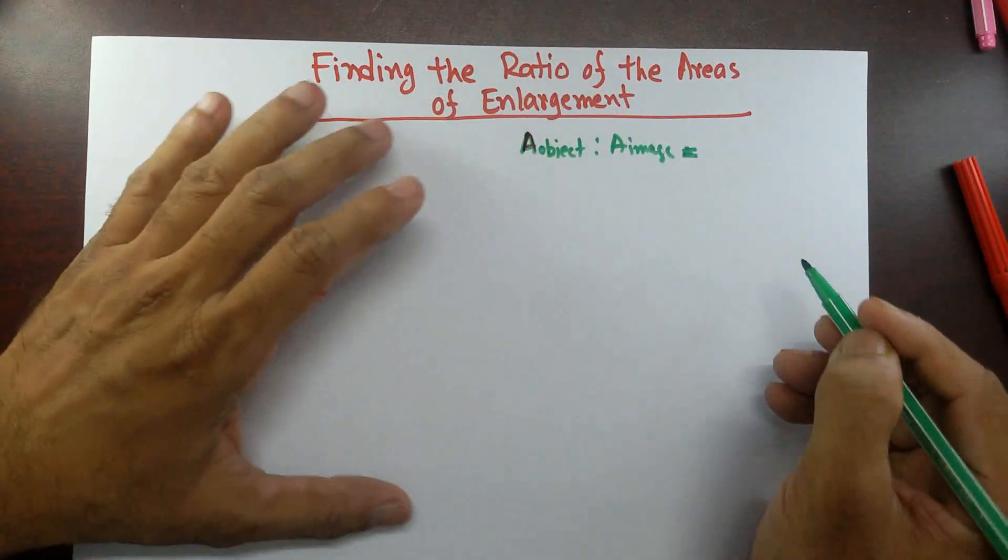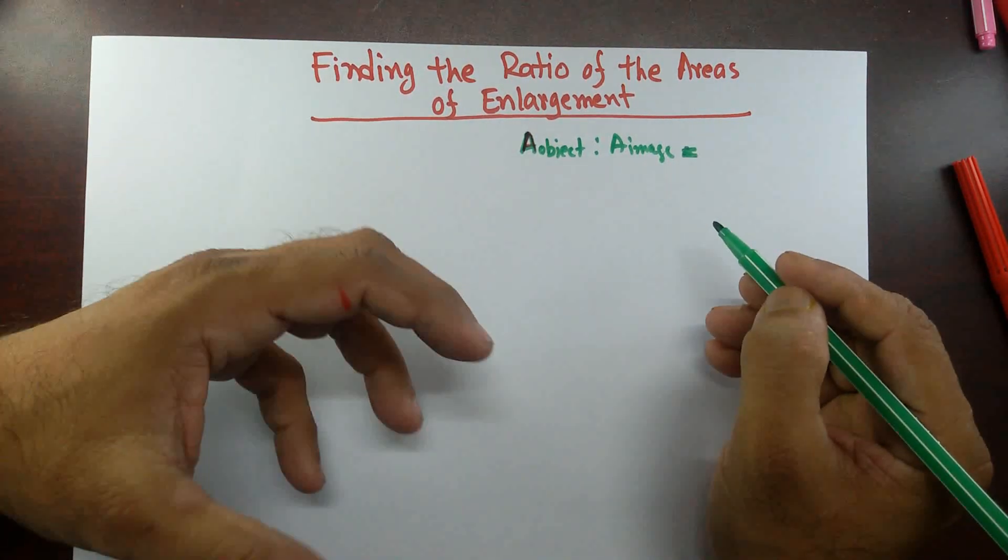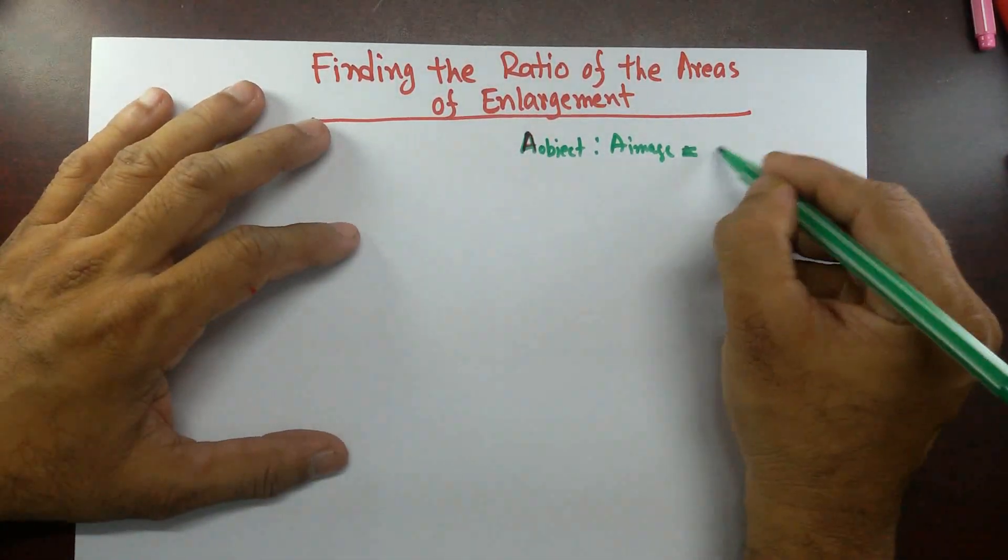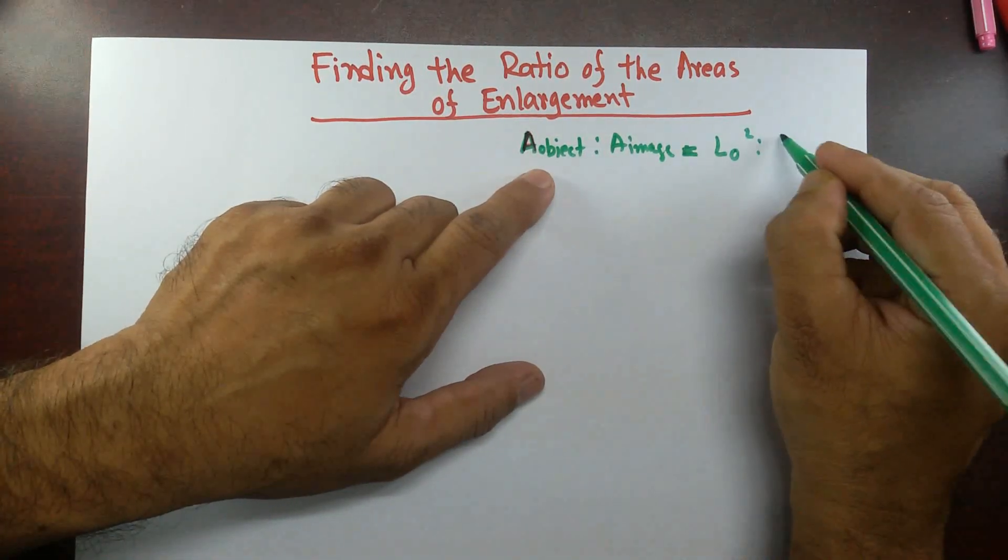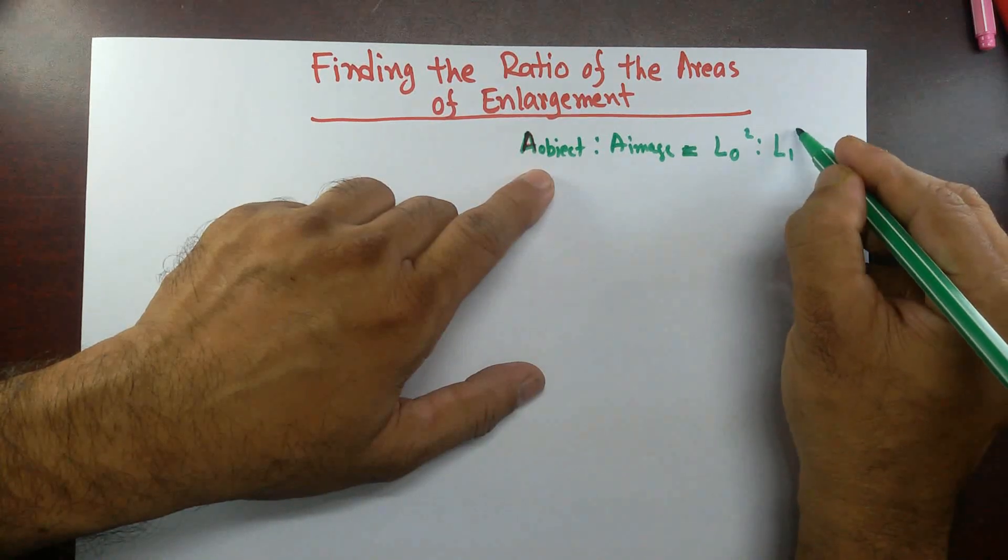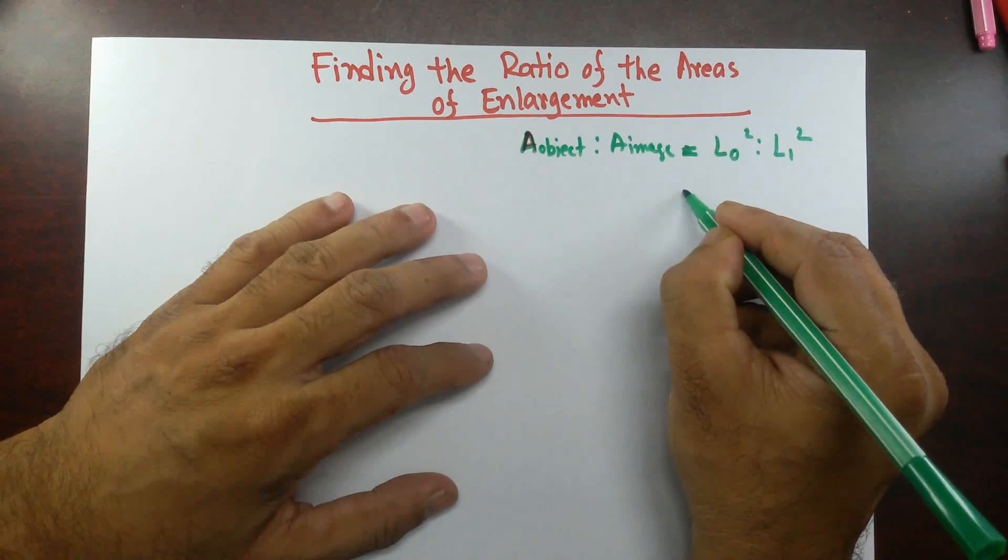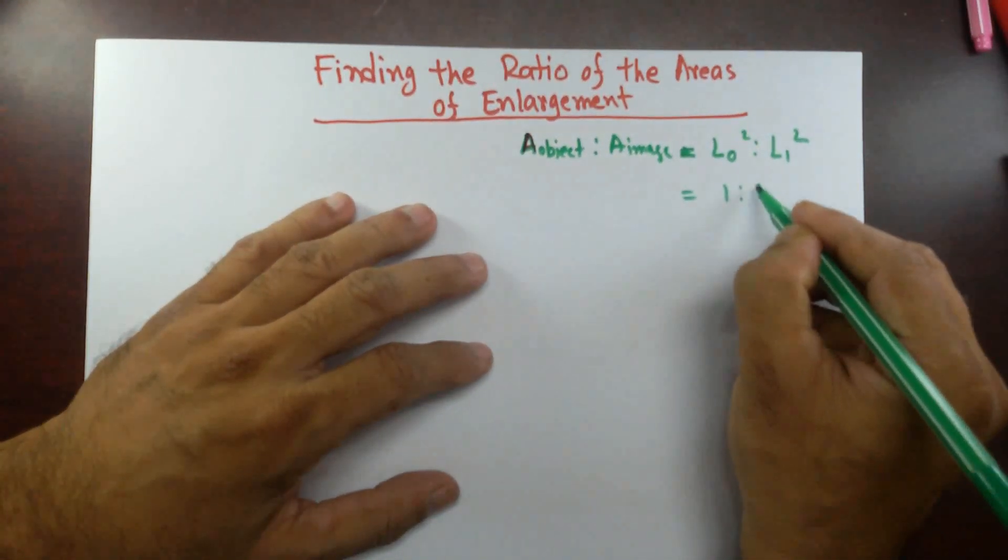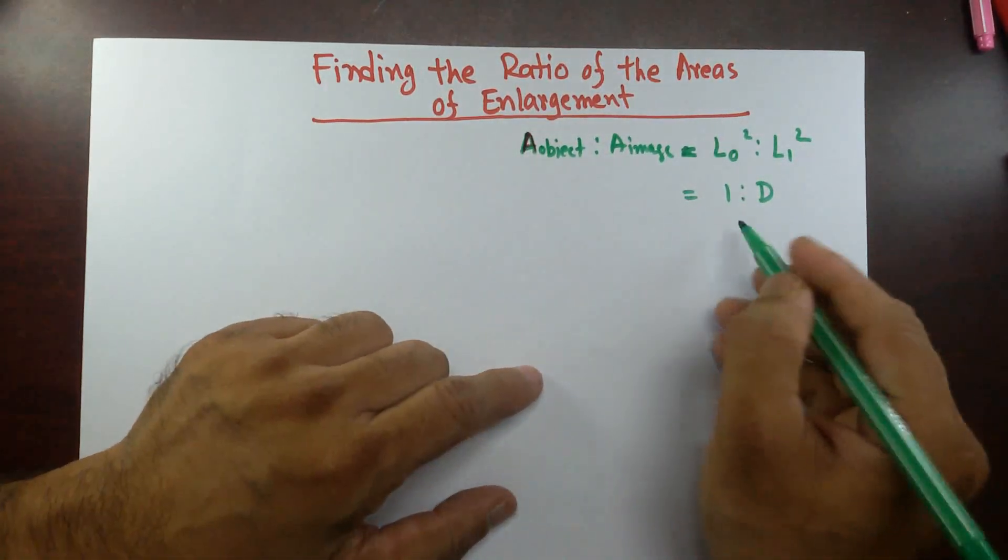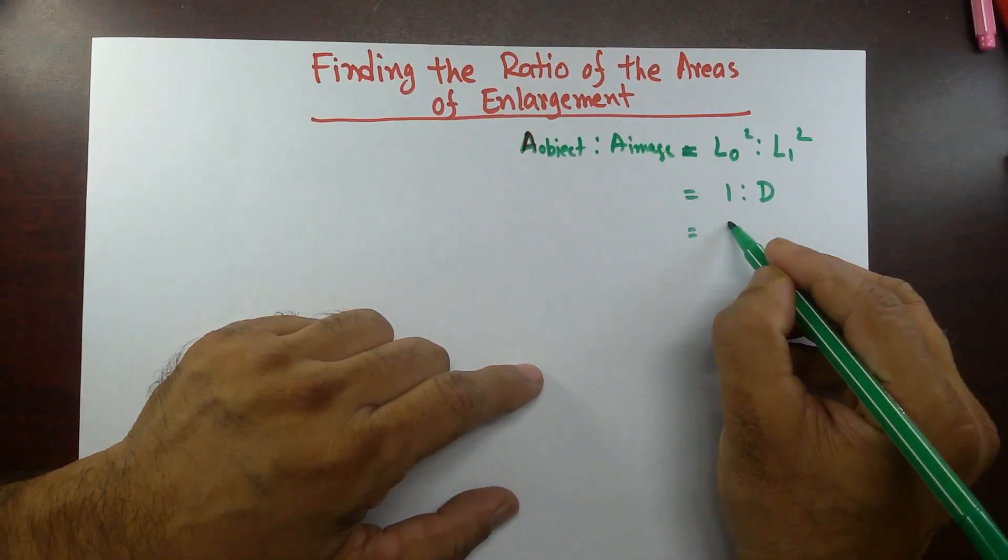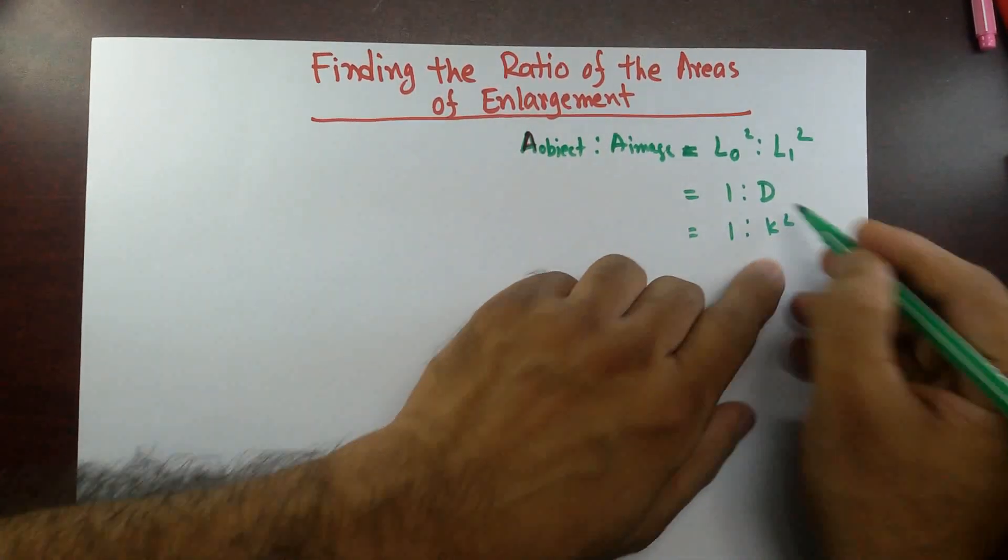There are three different rules we're going to use here. One is, if you remember the congruent and similarities, then length of object squared is to length of image squared. That's area. Or we can do 1 is to determinant. If you are familiar with the matrix, then you know what I'm talking about. Or simply 1 is to k squared. Now this k is the scale factor.